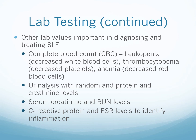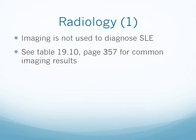When looking at the CBC and reading doctor's notes, you may see a reference to a 'shift to the left' in the WBC count — that indicates the presence of infection. A urinalysis with random protein and creatinine levels, serum creatinine, and BUN levels assess kidney function. CRP and ESR rates identify inflammation, as elevated levels indicate inflammation is present. Imaging is not used to diagnose SLE, but a table in your textbook provides a rundown of common imaging results.